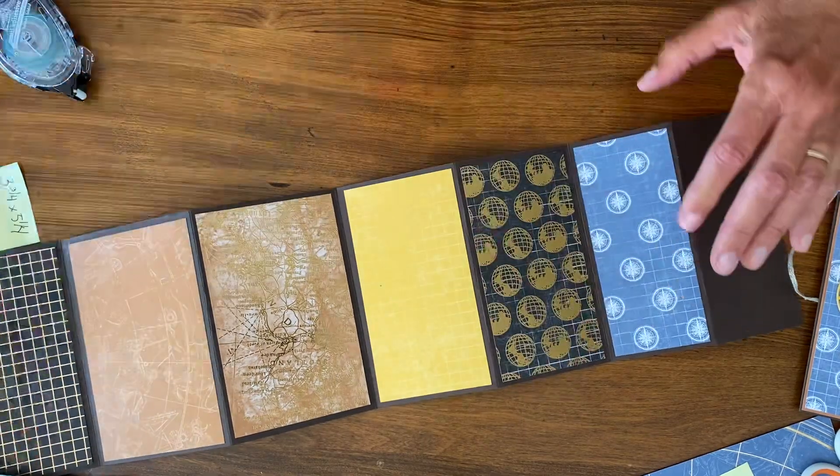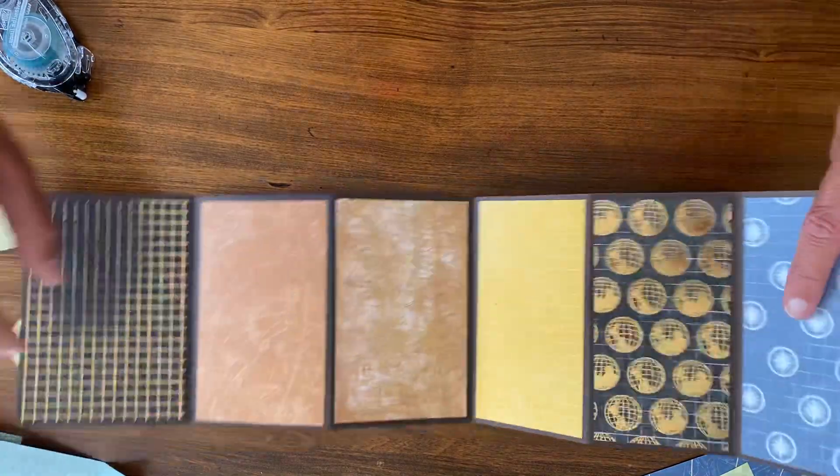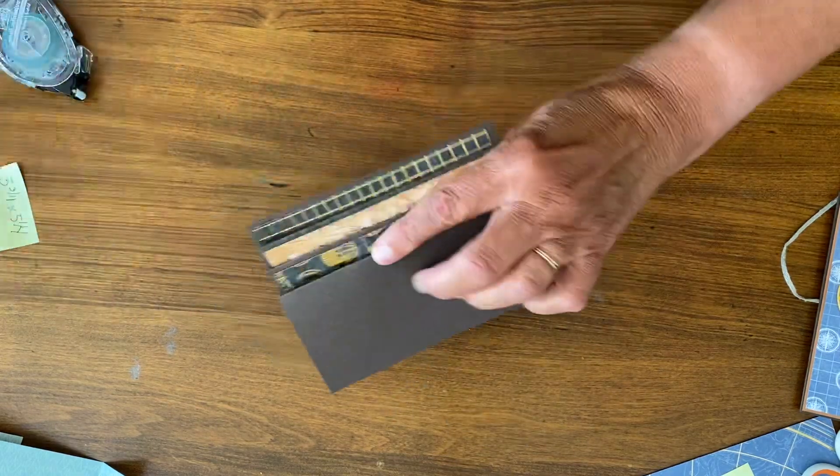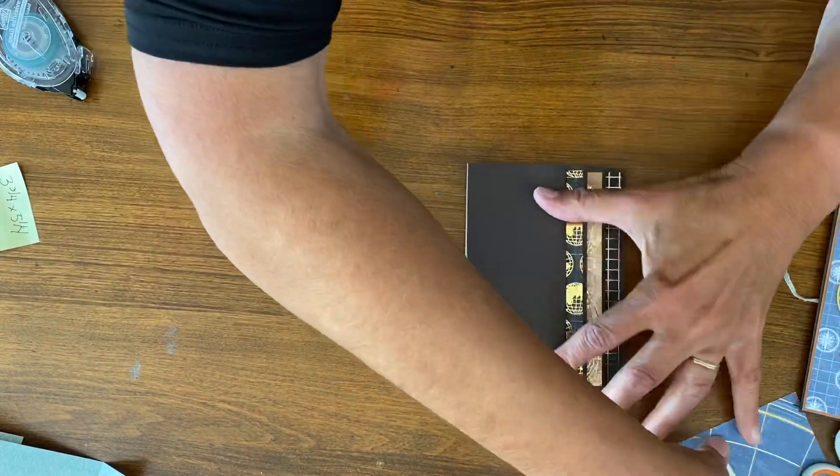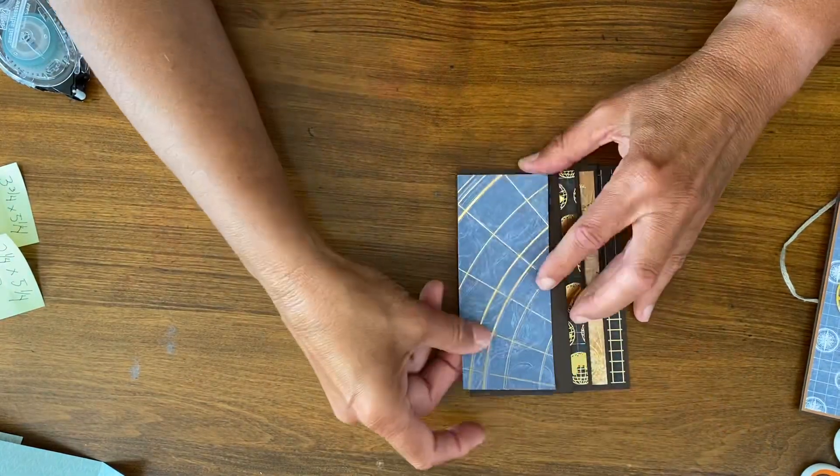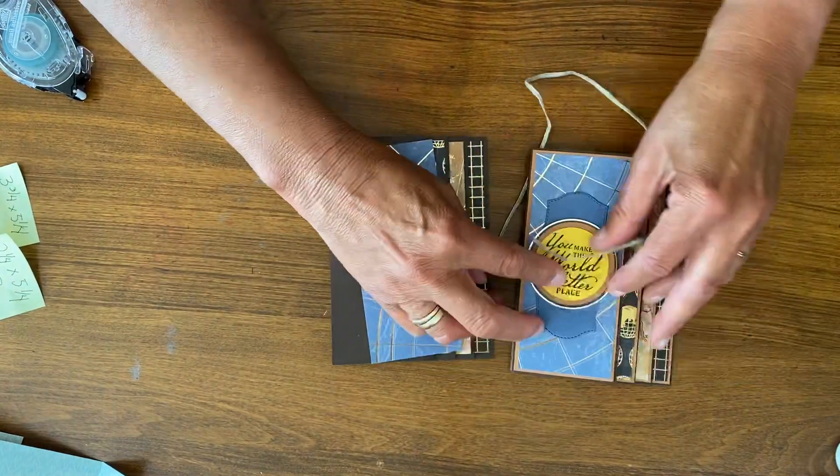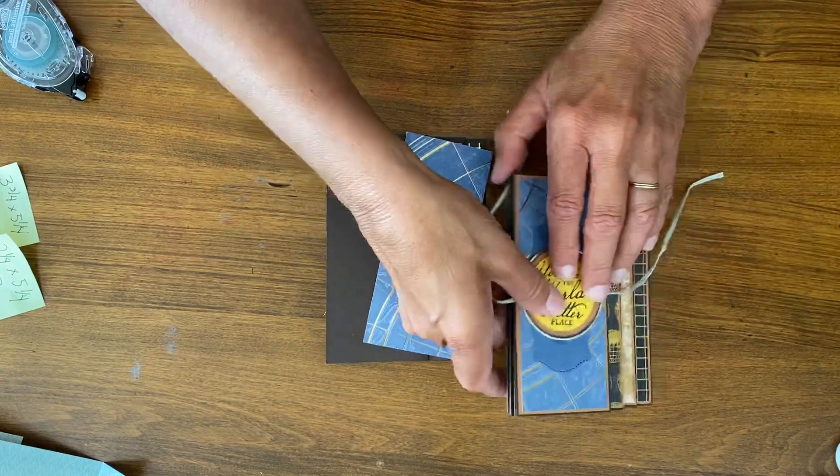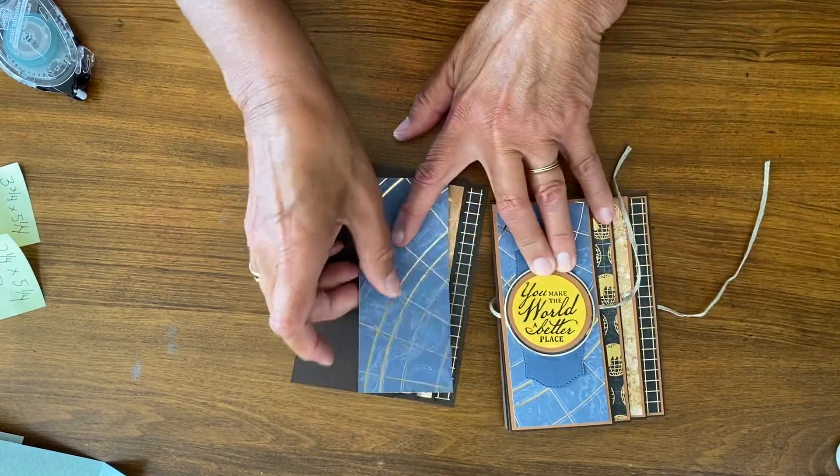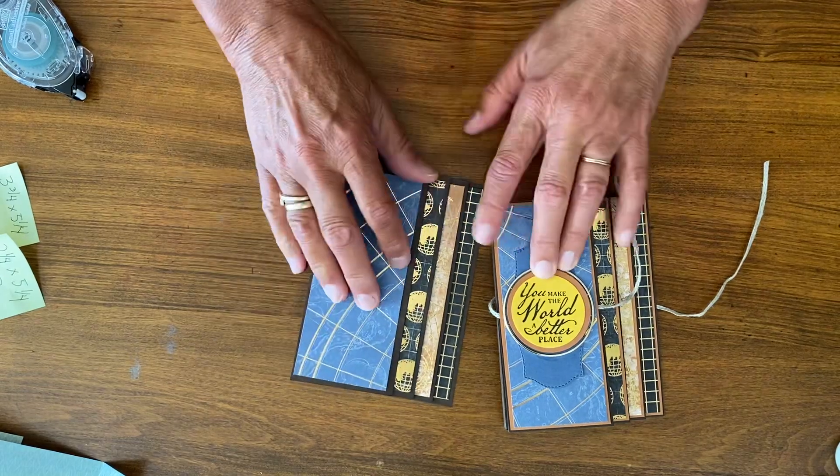And do you know what I forgot to bring out here was my ribbon. I'm putting this last piece. I'm going to want to put my ribbon around it because that's going to go over the ribbon and hold it in place. So that's what I'm missing. But how pretty is that?